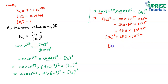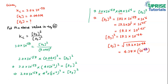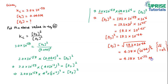Now to find [O₃], we take the square root: [O₃] = √(19.2 × 10⁻⁶⁴). This equals √19.2 × (10⁻⁶⁴)^(1/2). The square root of 19.2 is approximately 4.38, and (10⁻⁶⁴)^(1/2) = 10⁻³². So [O₃] = 4.38 × 10⁻³² molar.